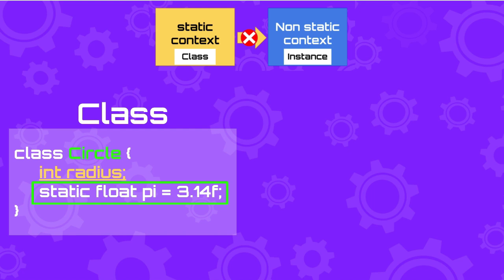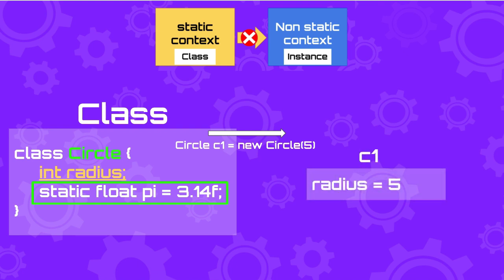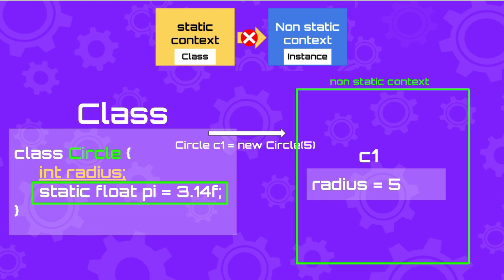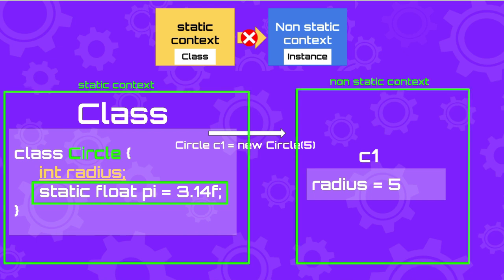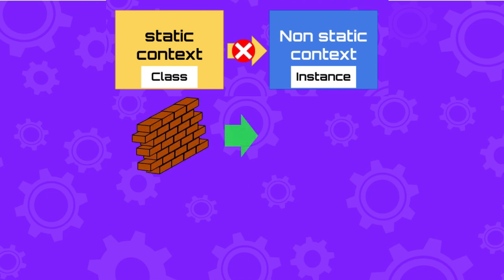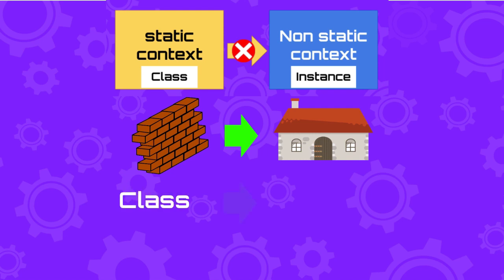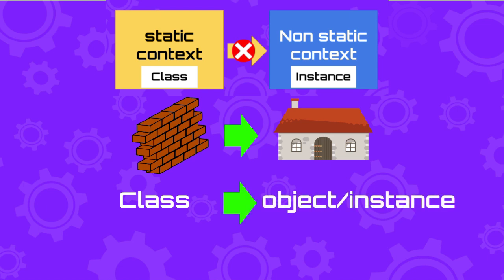As soon as you call 'new Circle' you are creating an instance of the class — in other words, an object — that will be part of the non-static context. To help you remember, you can think of bricks and a house: you have the bricks and then you use the bricks to build the house. The bricks are the class, and using the class you create the object. That's why you can access static fields, which belong to the class, from a non-static context, but it doesn't work the other way around. If the instance exists, you can be sure the class exists as well, however you could have a class and no instances of it.